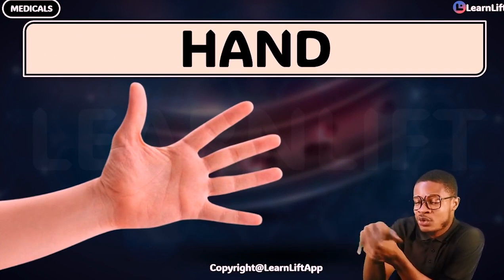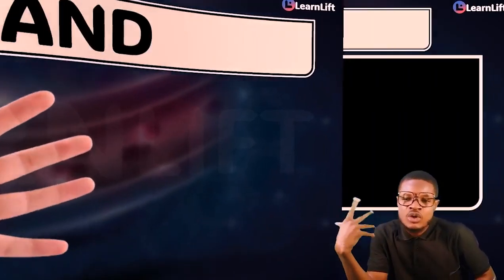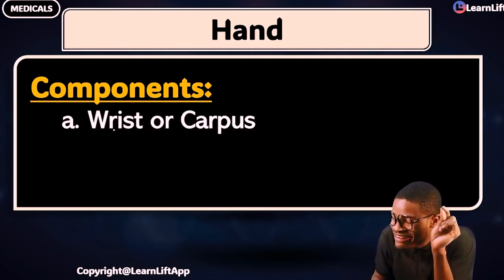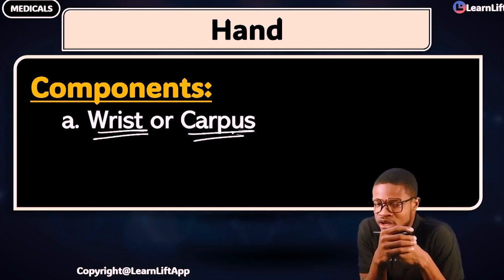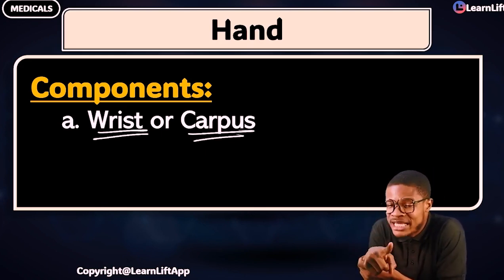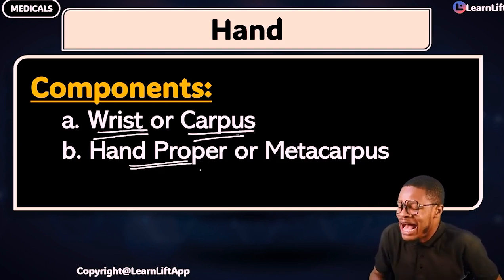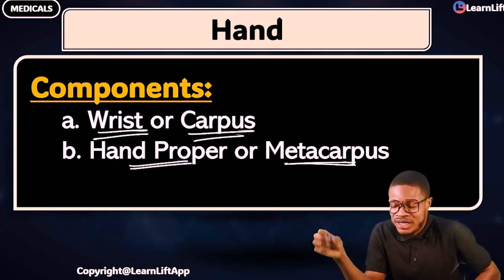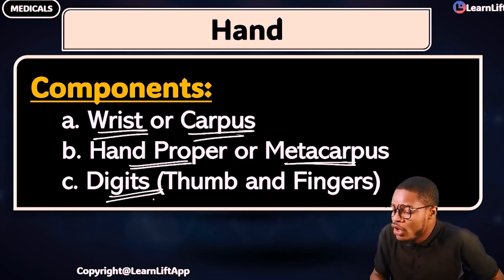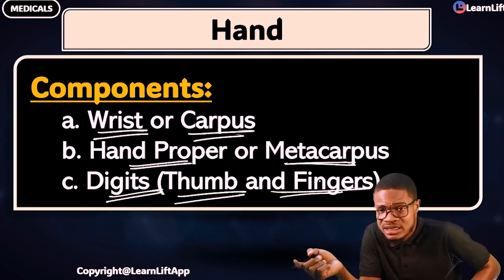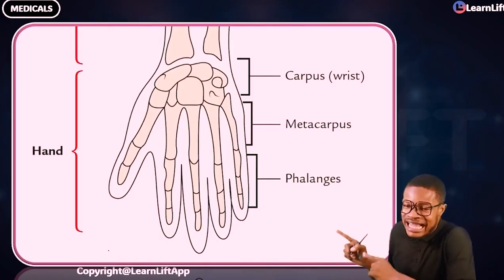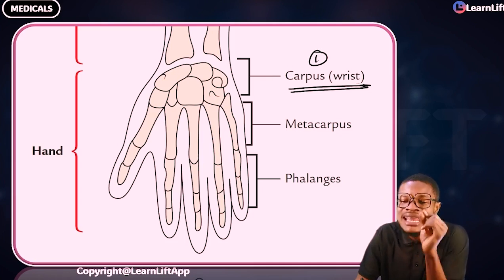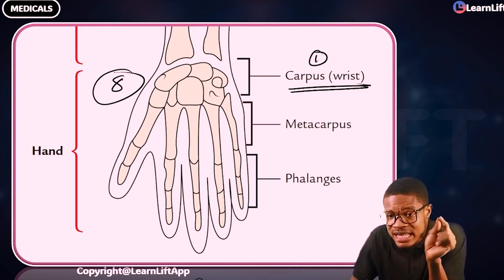Now the hand — what should you know? There are three major compartments in the hand. Number one is the wrist or carpus. Number two is the hand proper or metacarpus. Number three is the digits, which include the thumb and the fingers. There are eight carpal bones in the carpus.